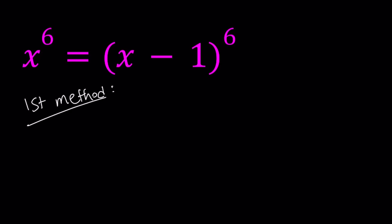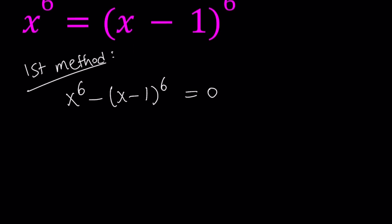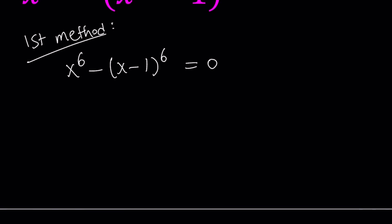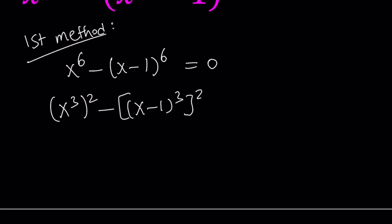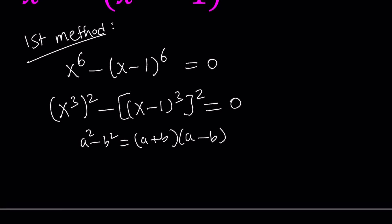For the first method, let's go ahead and put both of these on the same side. Then I would like to use difference of two squares. So I'm going to write the first expression as x cubed squared and the second one as x minus 1 cubed squared, and the difference is equal to 0. Using difference of two squares, remember: a squared minus b squared equals a plus b multiplied by a minus b.